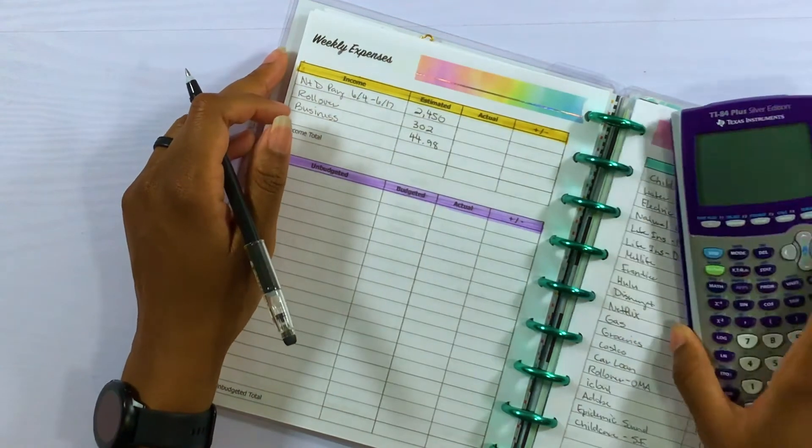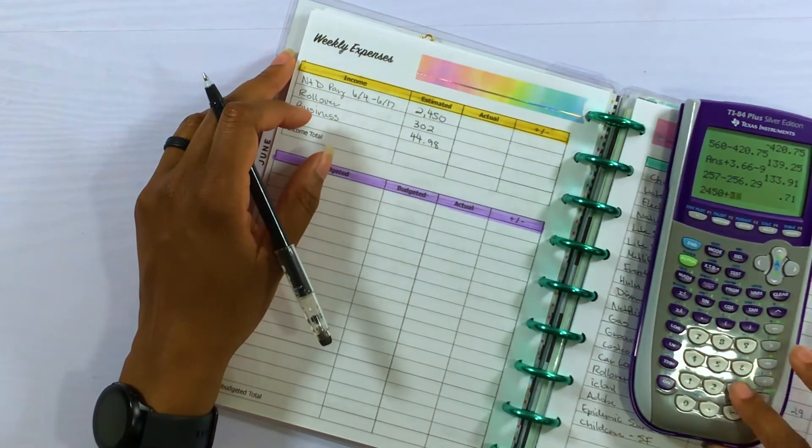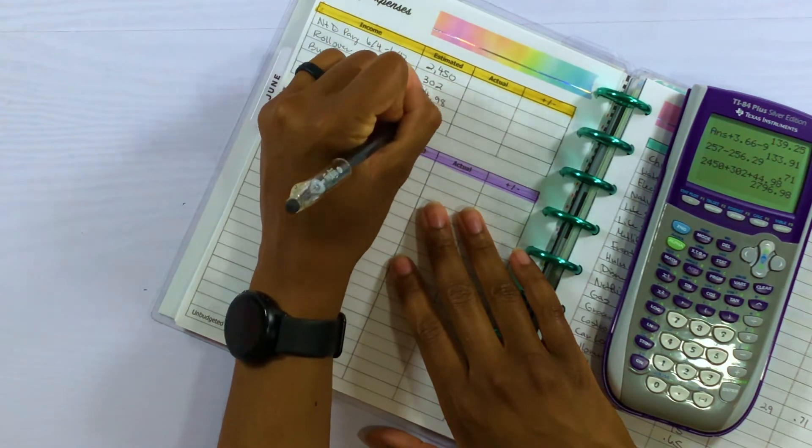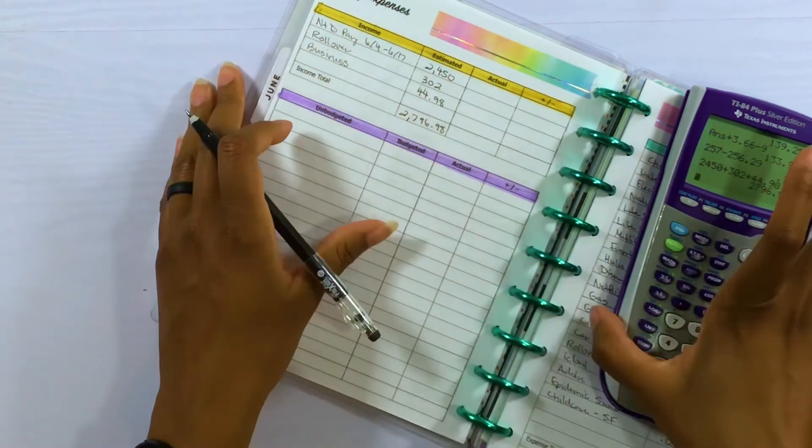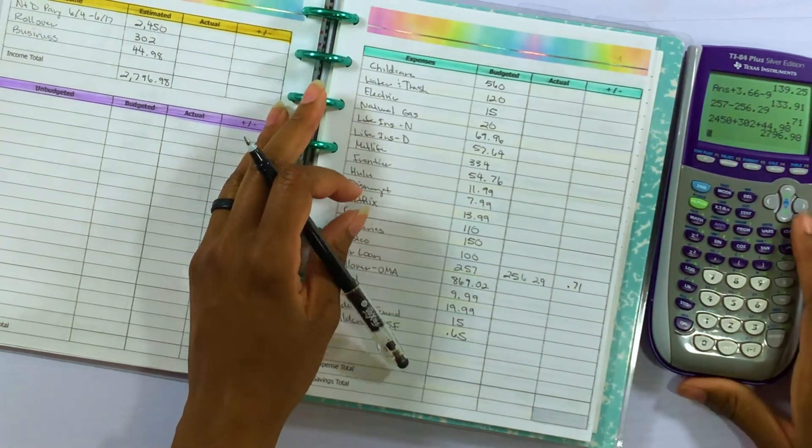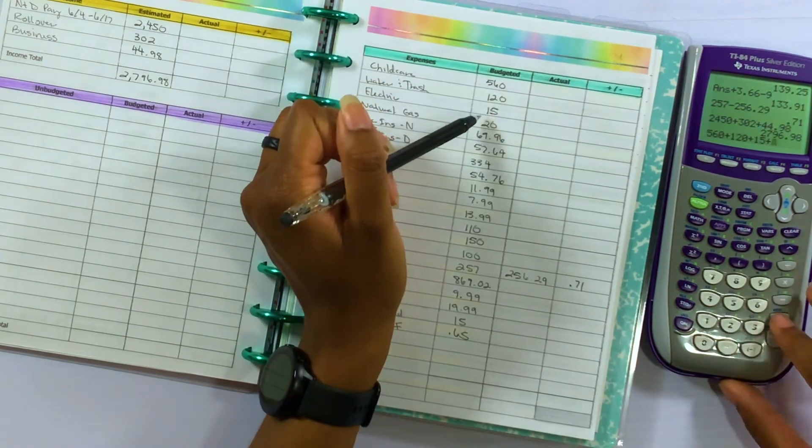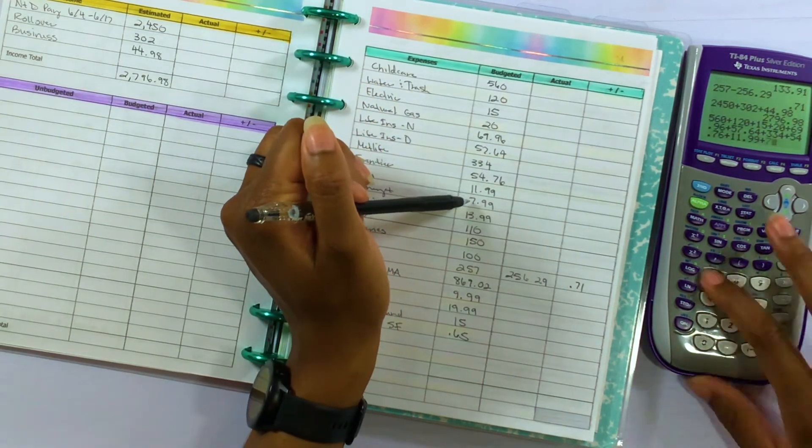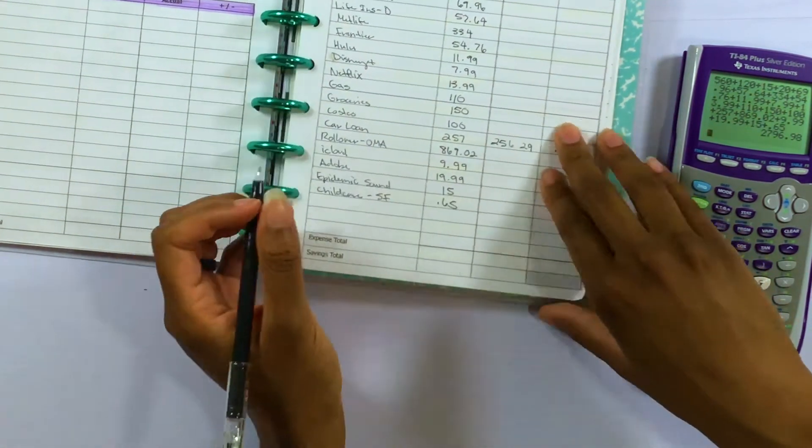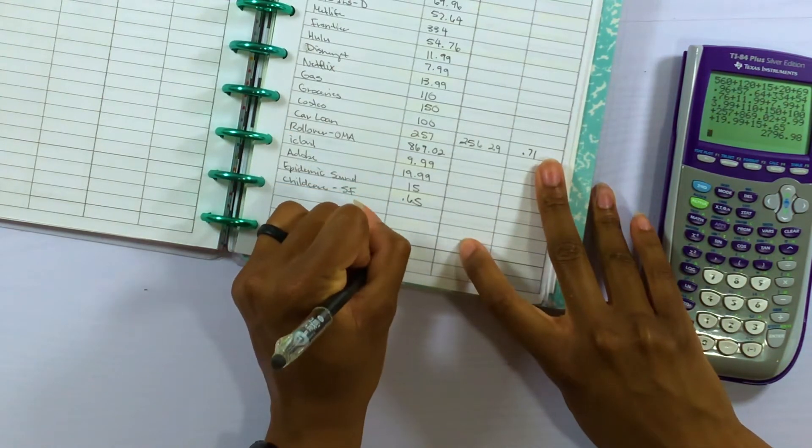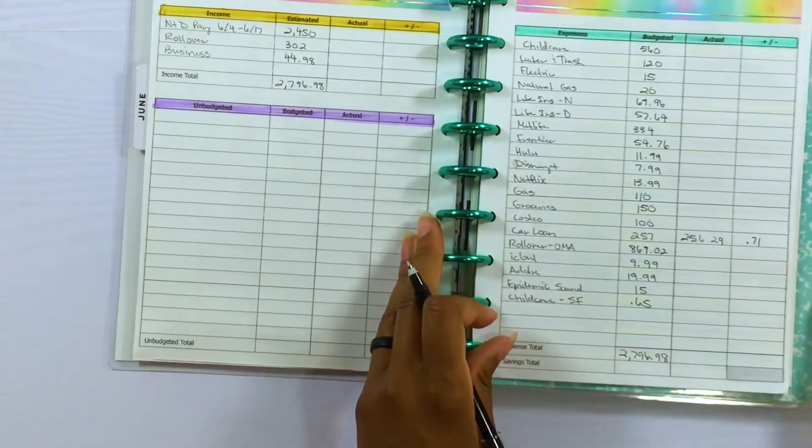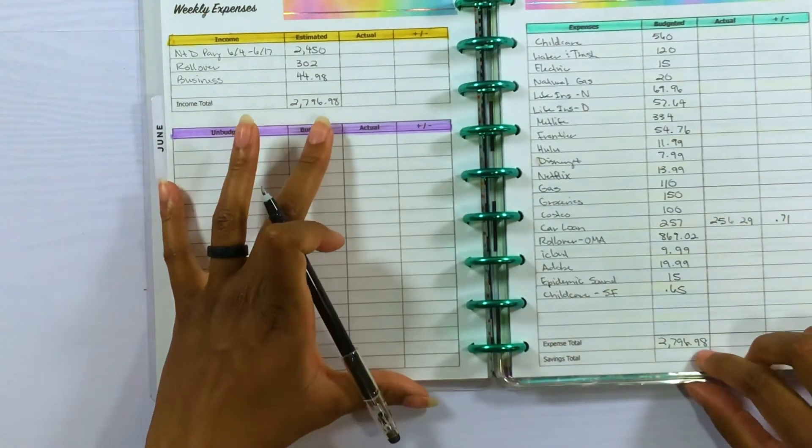Okay, let's go ahead and total these up. So that expected total is $2,796.98, and then let's go ahead and total up the expenses. So the expense total is $2,796.98 which matches the income total, so that means we have a zero-based budget, which is what I want.